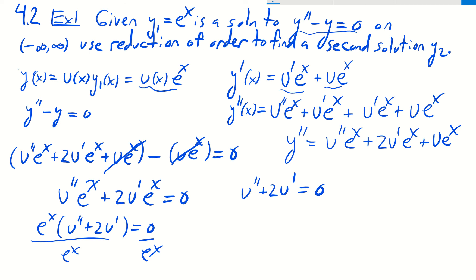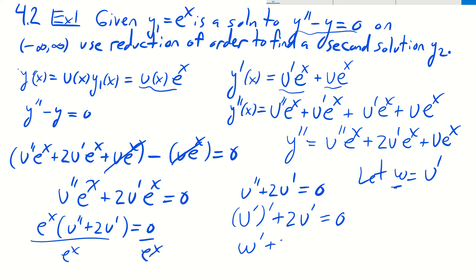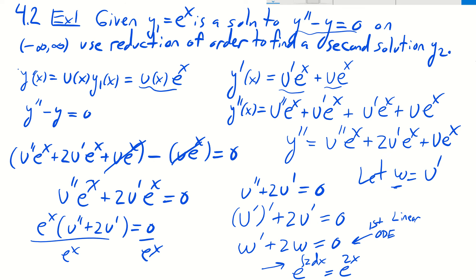Let's make the substitution w = u′. Then u″ is the derivative of u′, which becomes w′. Replacing every u′ with w, the equation becomes w′ + 2w = 0. This is now a first-order linear ODE in w. We spent a lot of time solving these — we know how to solve them using an integrating factor. The integrating factor for this would be e^(∫2 dx) = e^(2x). So we multiply both sides by e^(2x).